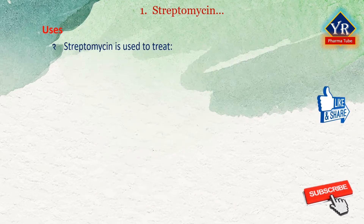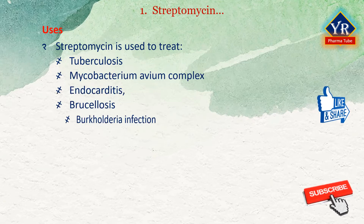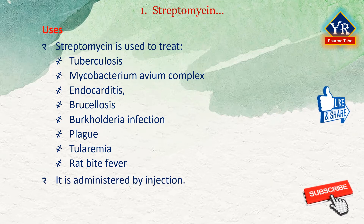Uses of streptomycin: Streptomycin is an antibiotic used to treat a number of bacterial infections including tuberculosis, Mycobacterium avium complex, endocarditis, brucellosis, Burkholderia infection, plague, tularemia, and rat bite fever. For active tuberculosis, it is often given with isoniazid, rifampicin, and pyrazinamide. Streptomycin is administered by injection into a vein or muscle.